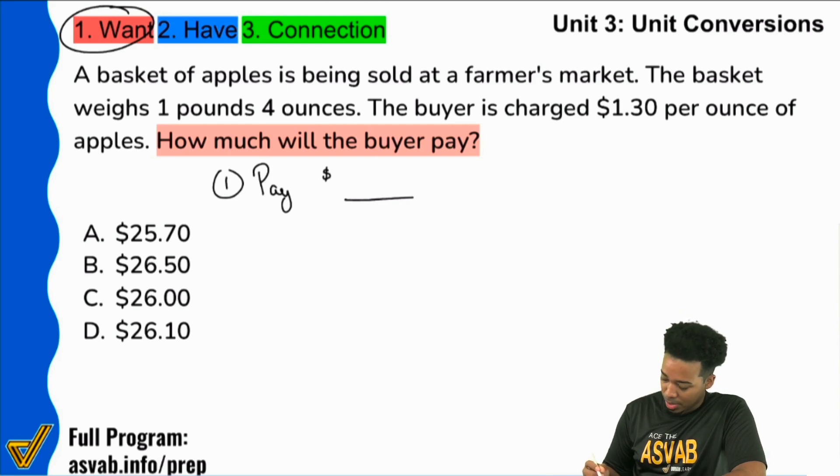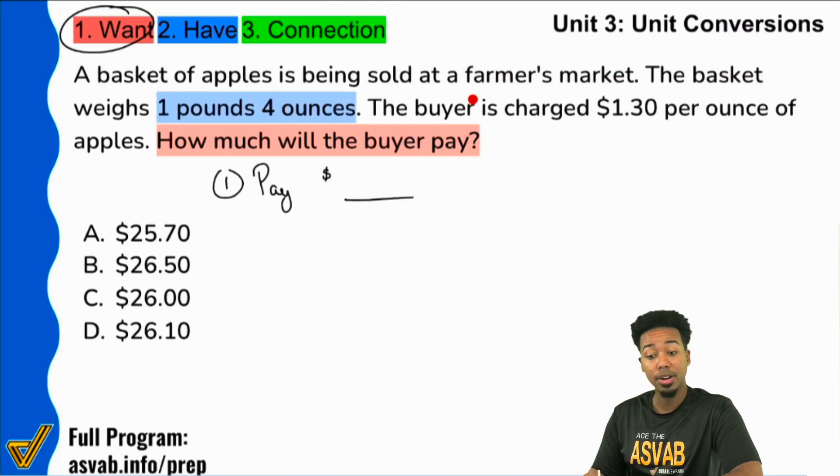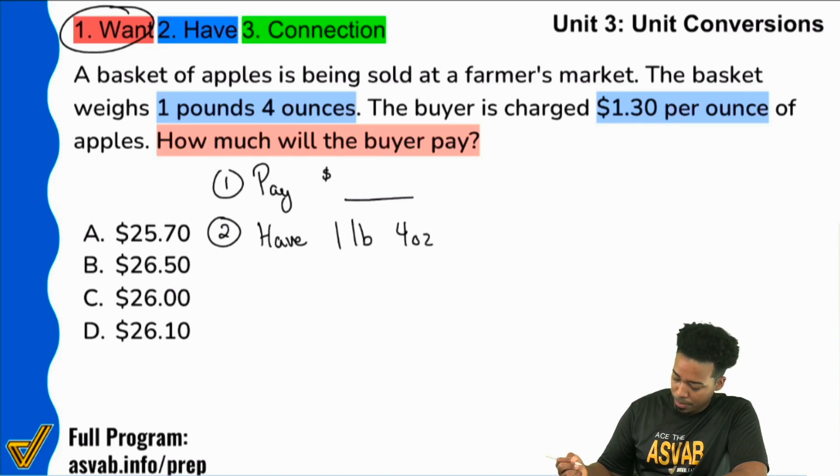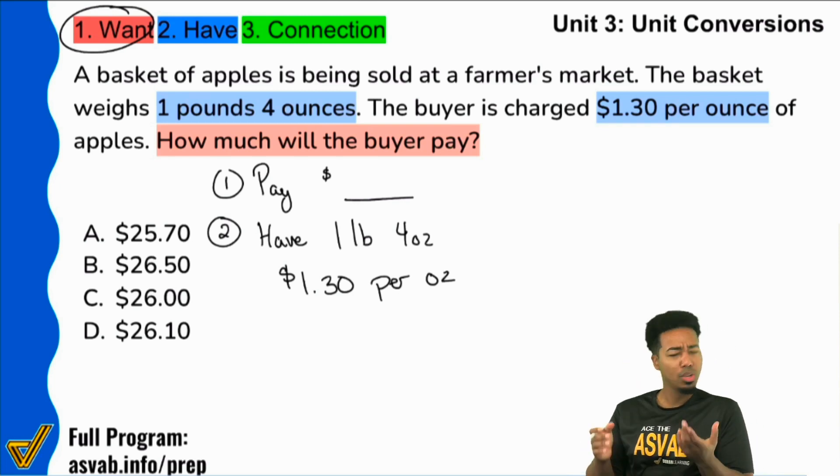So let's look at the information that we have given to us. We see here that it says a basket of apples is being sold at a farmer's market. And then it says the basket weighs this much. So the basket weighs a pound and four ounces. And it also says the buyer is charged $1.30 per ounce of apples. That's a key word right there. We definitely want to write that down. We're charged $1.30 per ounce. So taking a look at that information, I think we have enough already to solve this pretty straightforward, because we have one pound, four ounces, and we're charged $1.30 per ounce.